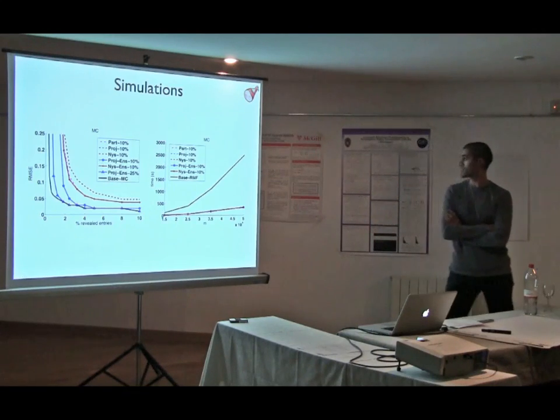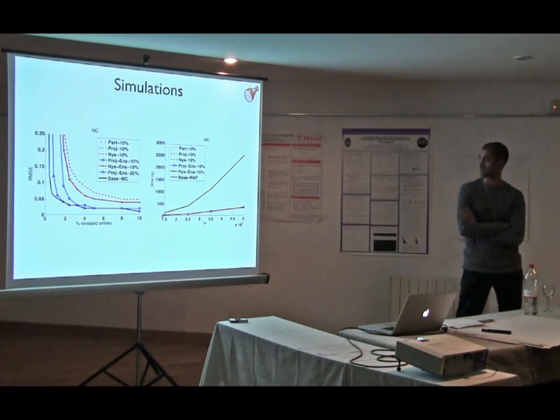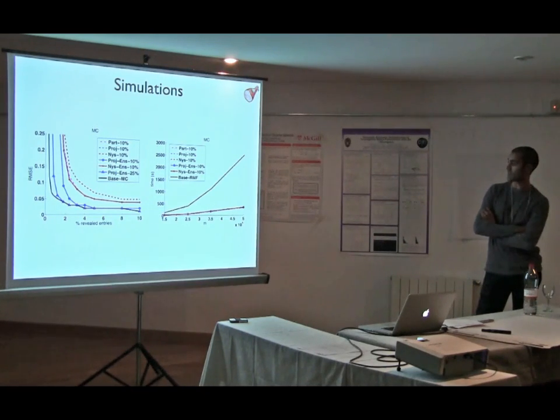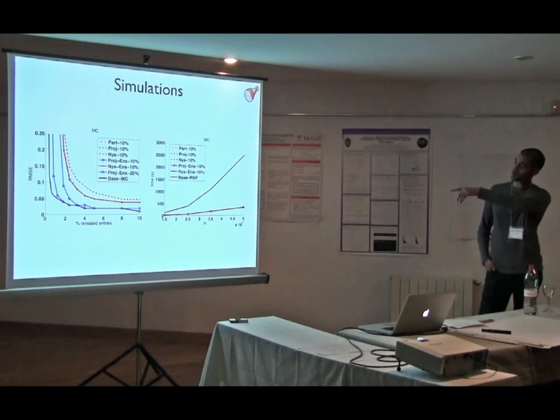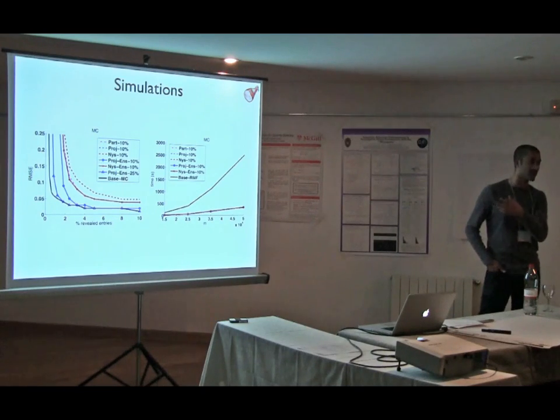Okay. So, first we looked at some simulations to see how this works. And what you see here on the left figure is the performance as a function of number of known entries. So as you'd expect, the matrix completion problem is harder as you see less and less entries, or alternatively it's easier as you see more and more entries.